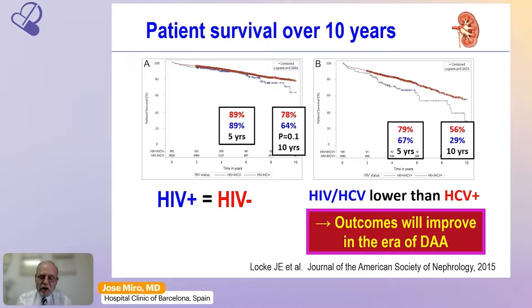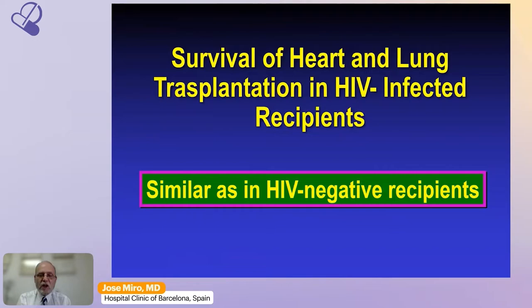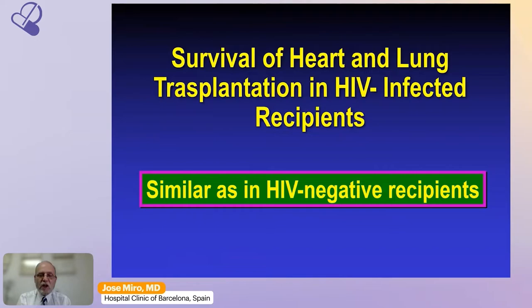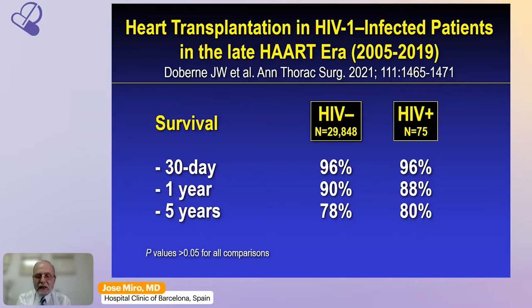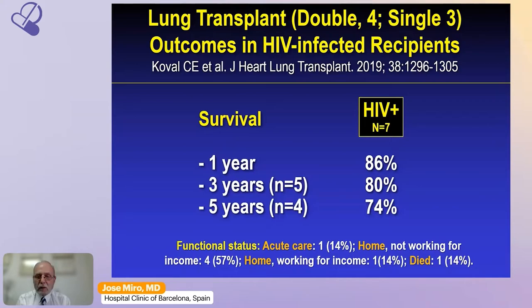The survival of heart and lung transplant HIV-infected recipients is similar to the HIV-negative population. In the US, 75 HIV-positive heart transplants were compared with almost 30,000 HIV-negative heart transplants, showing survival at five years of 78% versus 80%, quite similar. Although there is no comparative group, survival at five years for lung transplants in people living with HIV was 74%, with very good functional status.